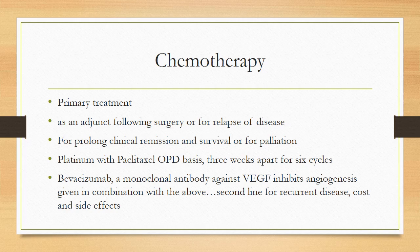Primary chemotherapy can be given as primary treatment, as an adjunct following surgery, or for disease relapse. The aim is to prolong clinical remission and survival, or sometimes for palliative purposes. First-line treatment is usually a combination of a platinum compound with paclitaxel, given on an outpatient basis, 3 weeks apart for 6 cycles. Platinum compounds are the most effective chemotherapeutic agents — heavy metal agents that cause cross-linkage of DNA strands, arresting cell replication. Carboplatin is the main platinum compound used; it is less renal-toxic and causes less nausea than cisplatin but is equally as effective.